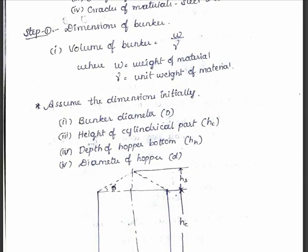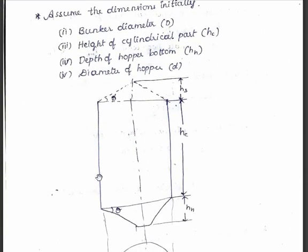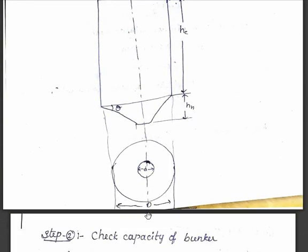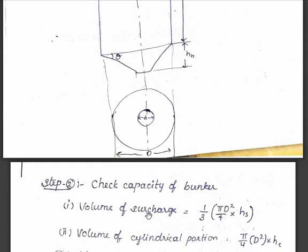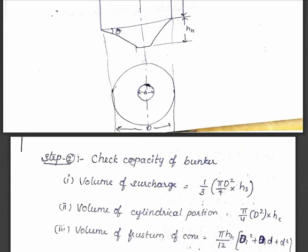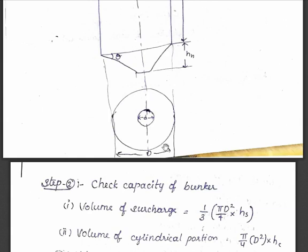The dimensions we assume are: the bunker diameter, the height of the cylindrical part, the depth of the hopper bottom, and the diameter of the hopper. After assuming these initial dimensions, we have to cross-check the capacity of the bunker.